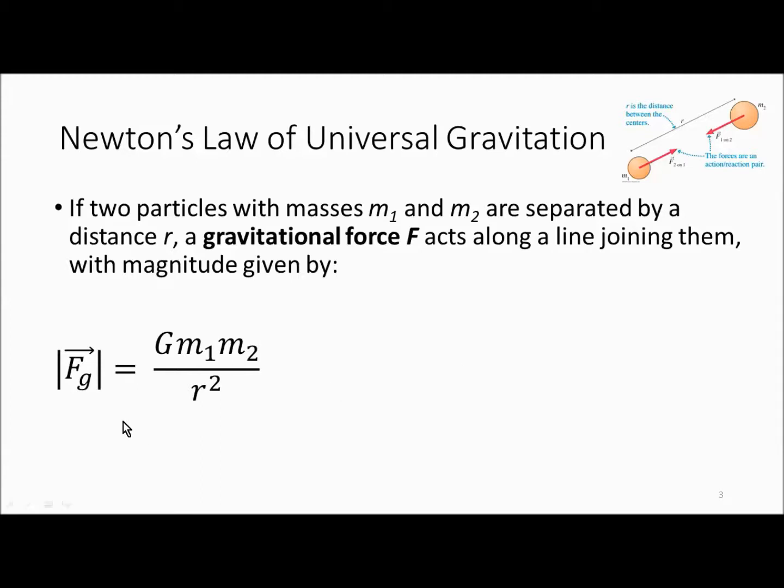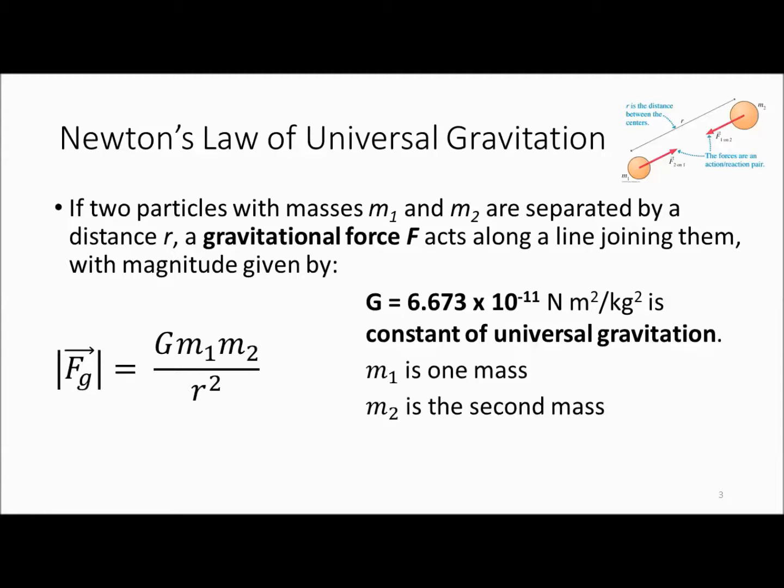This equation is on your AP Physics 1 equation sheet. It says the magnitude of gravity equals big G times M1 times M2 over R squared. Big G is a constant of universal gravitation, and you'll find that on your equation sheet. M1 is the first mass in kilograms, M2 is the second mass in kilograms, and R is the distance between the centers of those two masses.